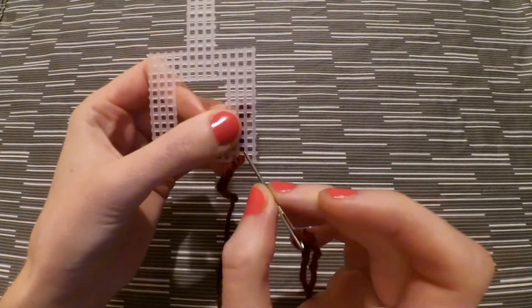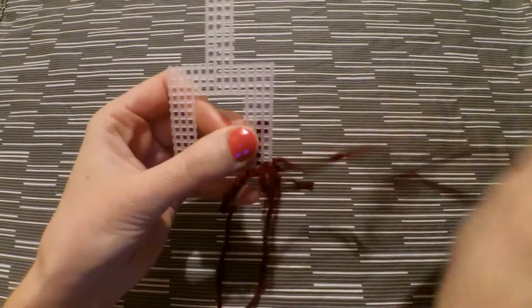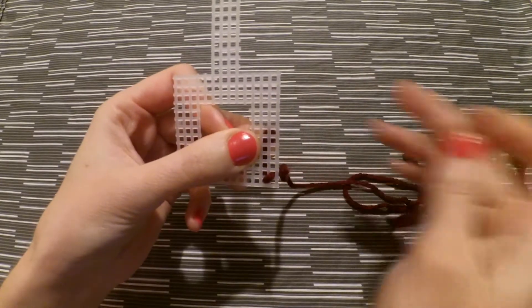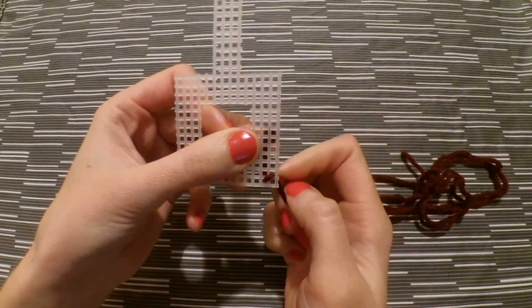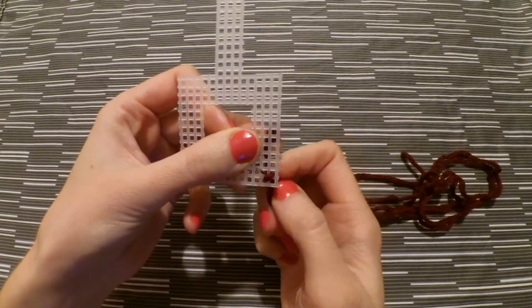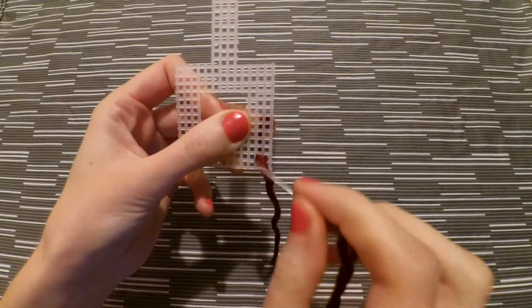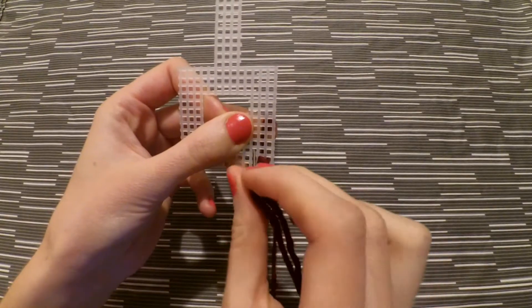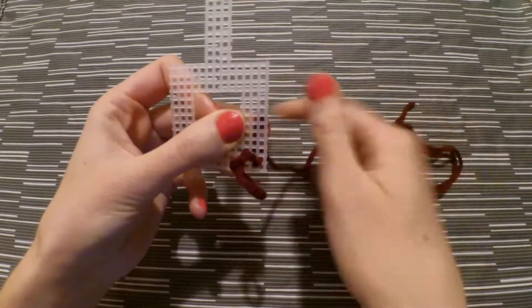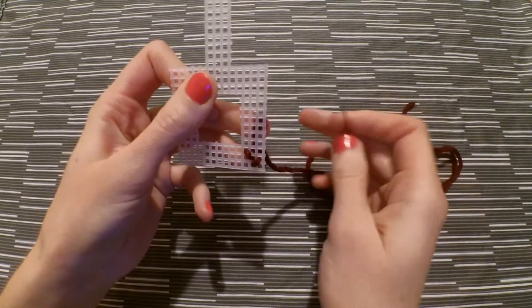Now you're going to count one up and one to the right and bring your needle back down. Next go one over to the left of where you ended your last stitch and bring your needle up. And this time we'll be making our stitch towards the left. So you're going to count one up and one to the left and bring your needle back down. And you're just going to continue this all the way around.